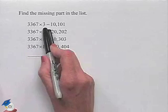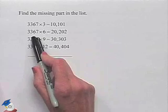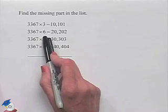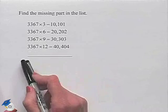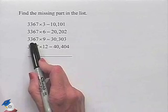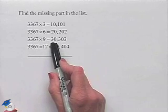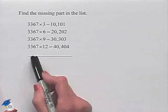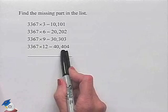3,367 times 3 equals 10,101. 3,367 times 6 equals 20,202. Let's just concentrate on the digits. We have 3,367. We're multiplying times 9 this time, and we get 30,303. We have the same number, this time multiplied times 12. We have 40,404.